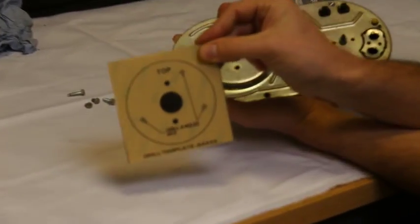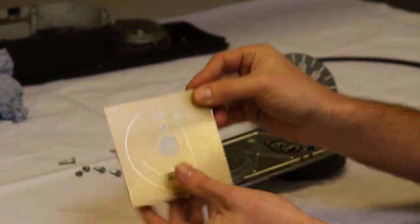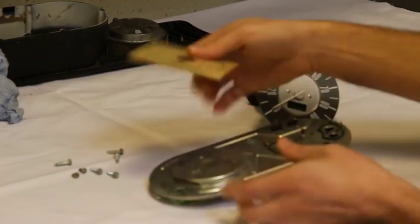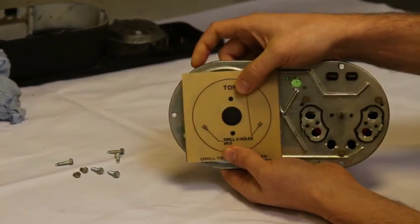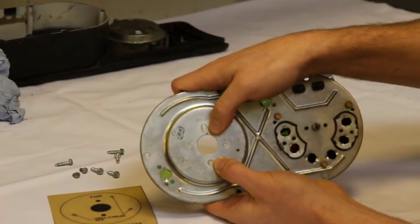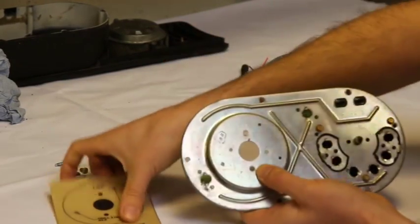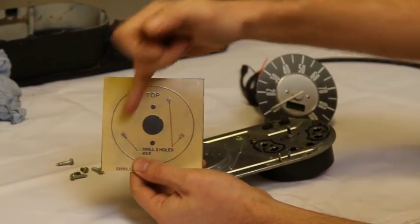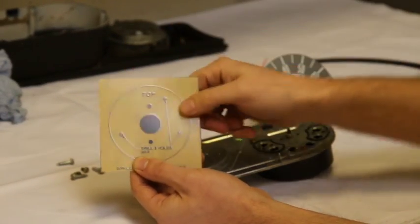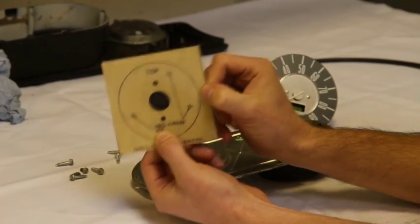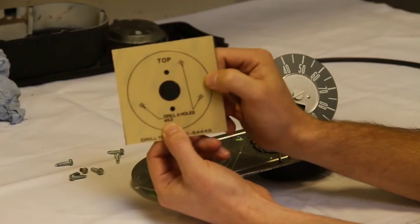Now this is your drill template. Now what you would do is this has got a sticky back on it. You'd peel your sticky back off, stick that over the top. Now you'd line up your two original holes with the screws that you've just taken out and the centre hole using black holes on the picture. And then you drill these three extra holes with a 3.2 drill bit. The drill bit size is written on the sticky.